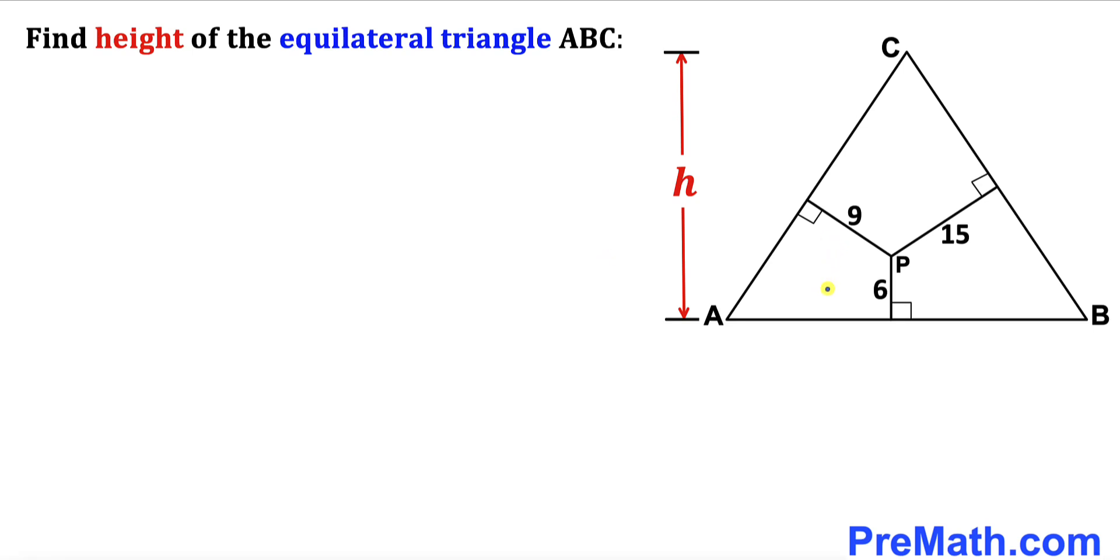Welcome to Pre-Math. In this video we have got this equilateral triangle ABC as you can see in this diagram such that these three perpendiculars meet at point P such that these distances are 9, 15, and 6 units.